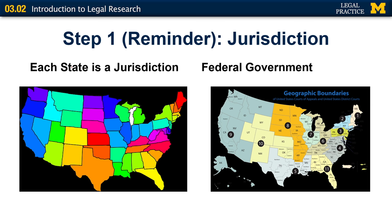Recall in the previous segment that one of your tasks was to determine which jurisdiction's law would likely govern the legal problem. That's critical because all primary sources of the law and many secondary sources of the law are collected by jurisdiction. Remember that each state is its own jurisdiction and the federal government its own jurisdiction.